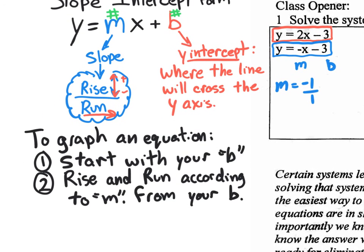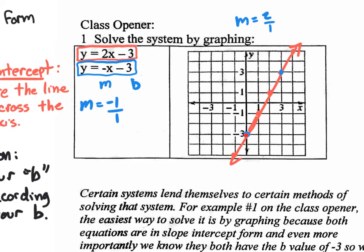The steps: start with your b, put the dot right on the y-axis. Both lines share the same y-intercept of negative 3. From that point, rise and run according to m. Because the slope is negative, I go down 1 and then over 1 to the right. I can also extend backwards — over 1, up 1 — repeating the pattern to get a solid line through all those points.